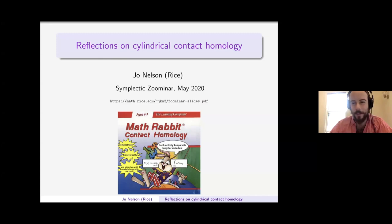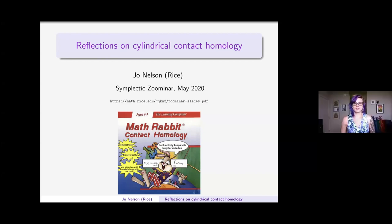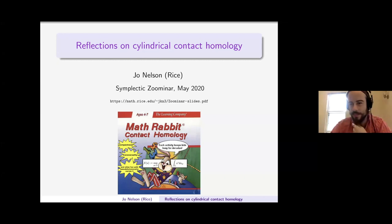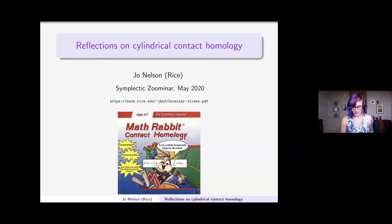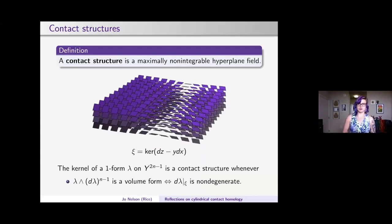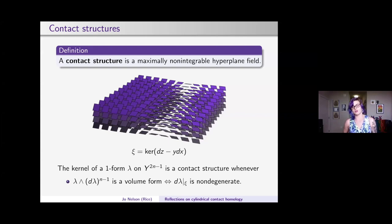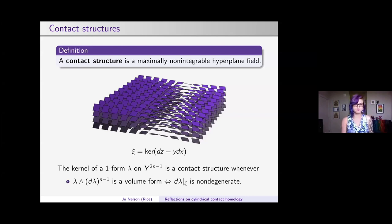Joe Nelson shares reflections on cylindrical contact homology. A contact structure is a maximally non-integrable hyperplane field. As an example, the standard contact structure on R³ is expressed as the kernel of dz minus y dx. The equation that tells us when a one-form is a contact structure is that lambda wedge d lambda to the n minus one must be a volume form, which is equivalent to lambda restricted to its kernel being non-degenerate.